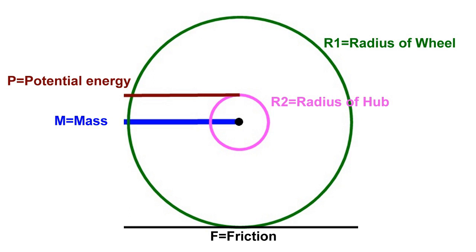So we've got the power of the rubber band, we've got the mass of the car, we've got the friction, and we've got the radius of the hub.